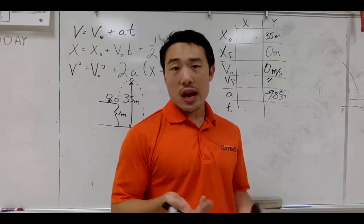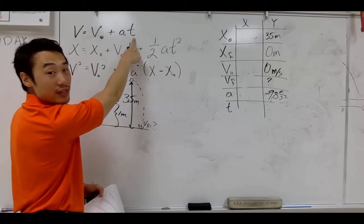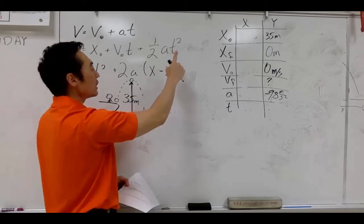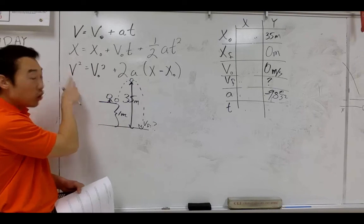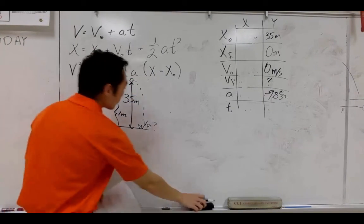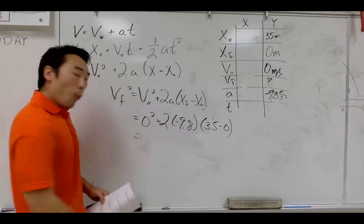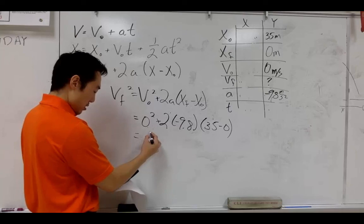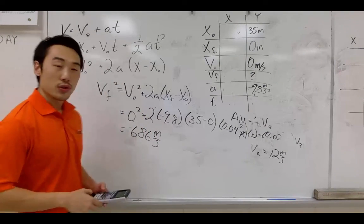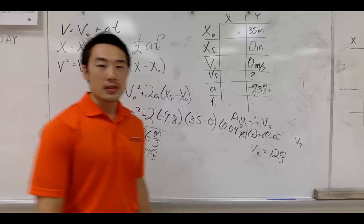Let's look at our equations to find the final velocity. We have the initial velocity, we have the acceleration, but we don't have the time — can't use the first or second equations. For the third equation: we are looking for the final velocity, we have the initial velocity, the acceleration, and the change in distance — so let's use that one. Write the original equation first and solve from there. Once we plug everything in, we find the answer is 686 meters per second squared in the negative direction, which means it's going down. Take the square root of both sides and you'll get your answer. That negative simply means the object is going down.